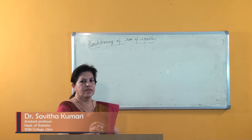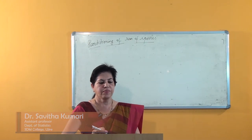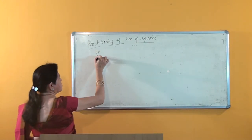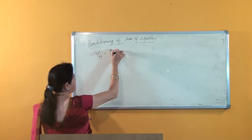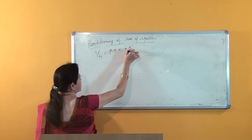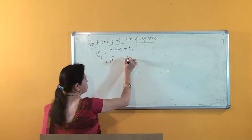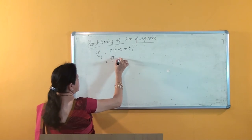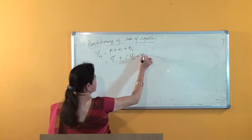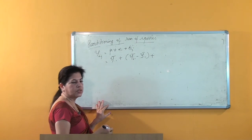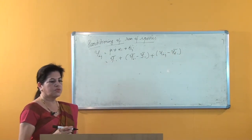Hello students. In the last class we discussed the estimation of parameters of one-way classification. Here we have the model: y_ij is equal to mu plus alpha_i plus epsilon_ij, where mu is estimated as y double-dot bar, alpha_i is equal to y_i-dot bar minus y double-dot bar, and epsilon_ij is y_ij minus y_i-dot bar. This is the model.